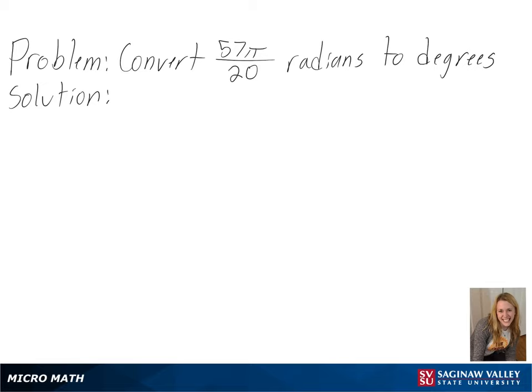Our problem is to convert 57 pi over 20 radians into degrees. To start out, we know that pi radians is equal to 180 degrees, so we can divide each side by pi to know the amount of degrees in one radian.